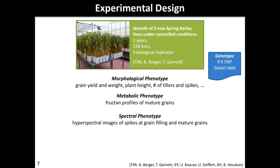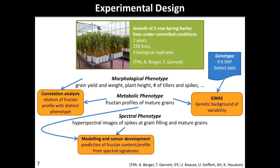We have been growing 150 lines from this population in two years with three biological replicates each under controlled conditions at the plant accelerator here in Adelaide. From these experiments, we collected mature grains and a number of morphological and spectral phenotypic traits. For the metabolic phenotype, I will show some data from the fructan profiles of the mature grains. We also measured hyperspectral images from the spikes at grain-filling stage, as well as mature grains. Together with the genetic information, we aim to use the fructan profiles for genome-wide association studies to dissect the genetic background, and also to develop prediction models for predicting fructan content and ideally the fructan profile from spectral data.